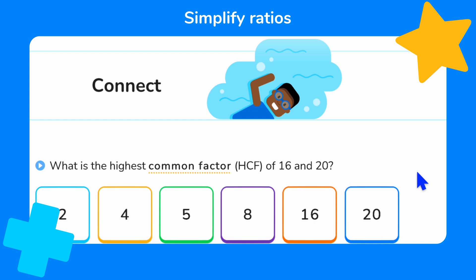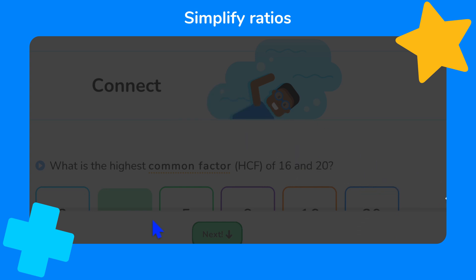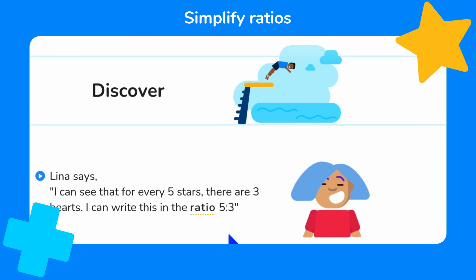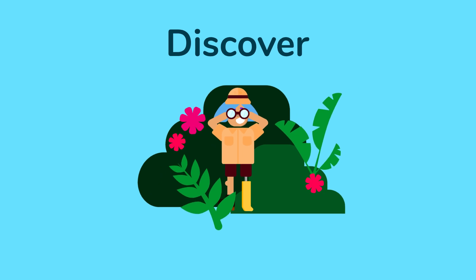Well done if you've already worked out what the highest common factor is of these two numbers. The largest number that is a factor of both 16 and 20 is 4. Great, we've just earned our first doodle star. Now we're ready to discover our new learning.